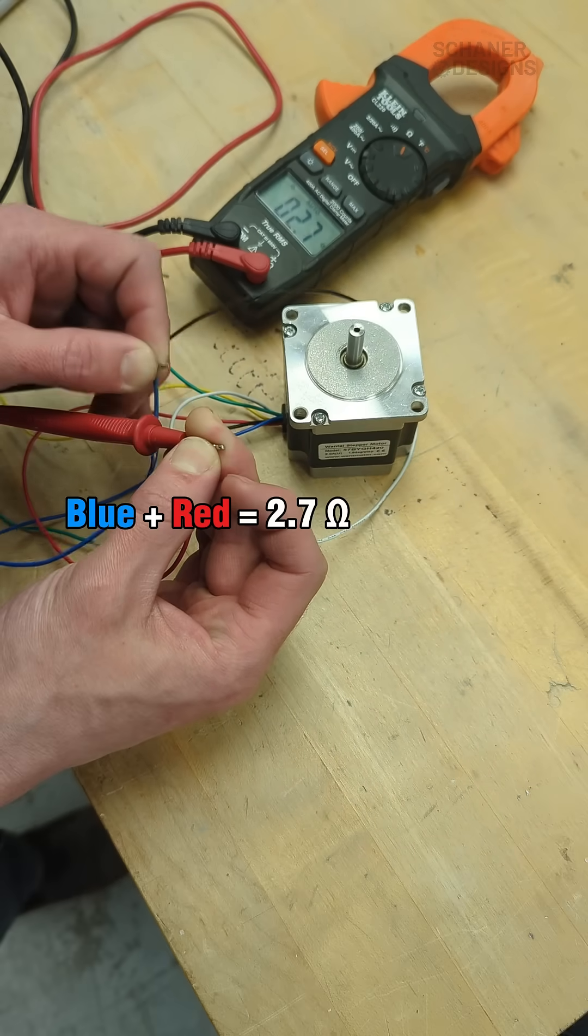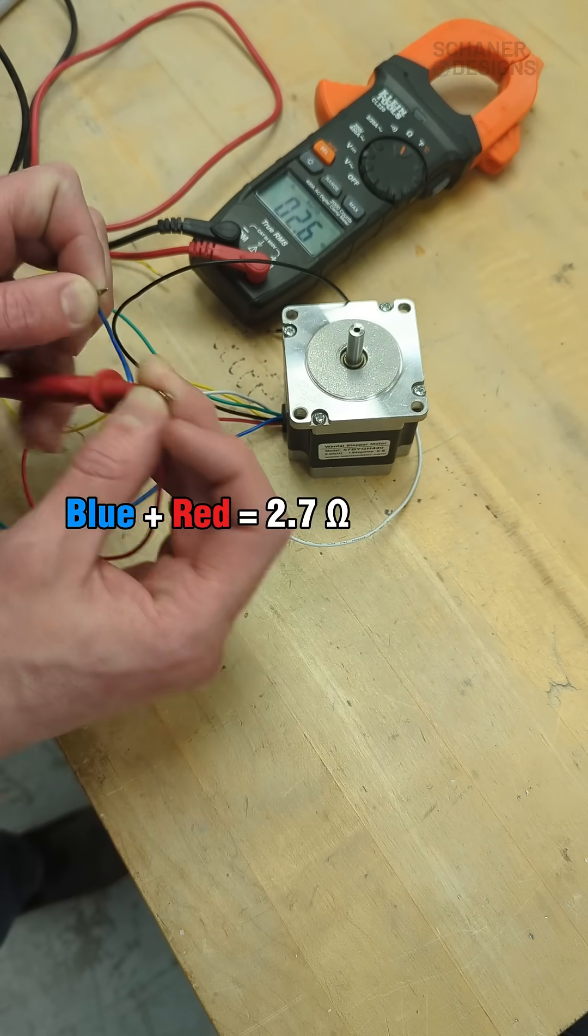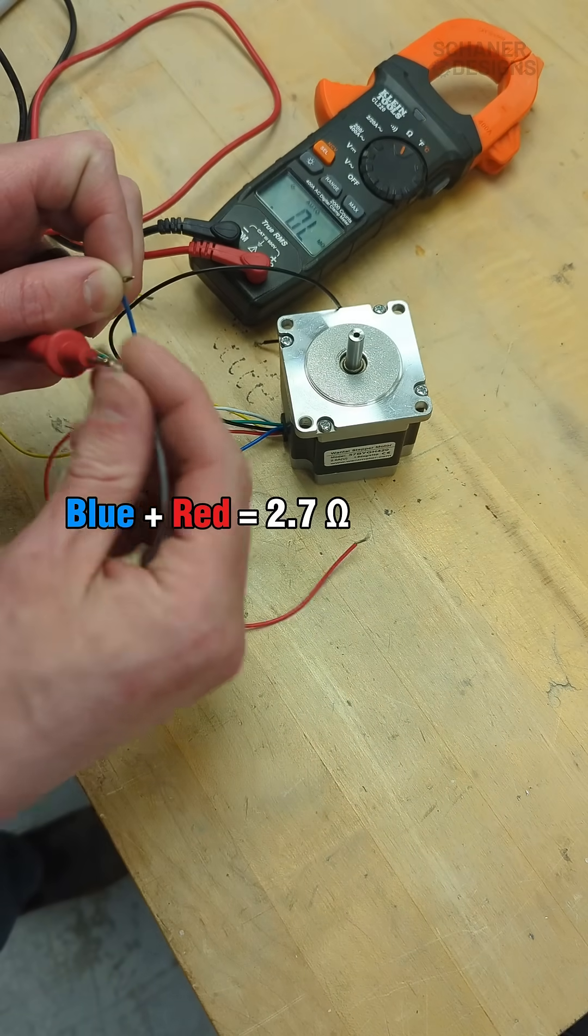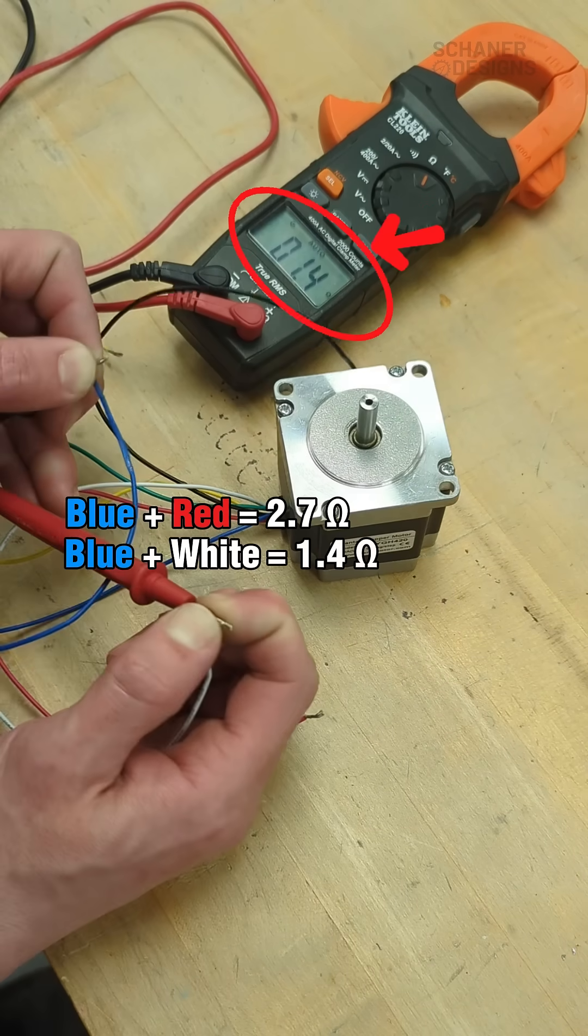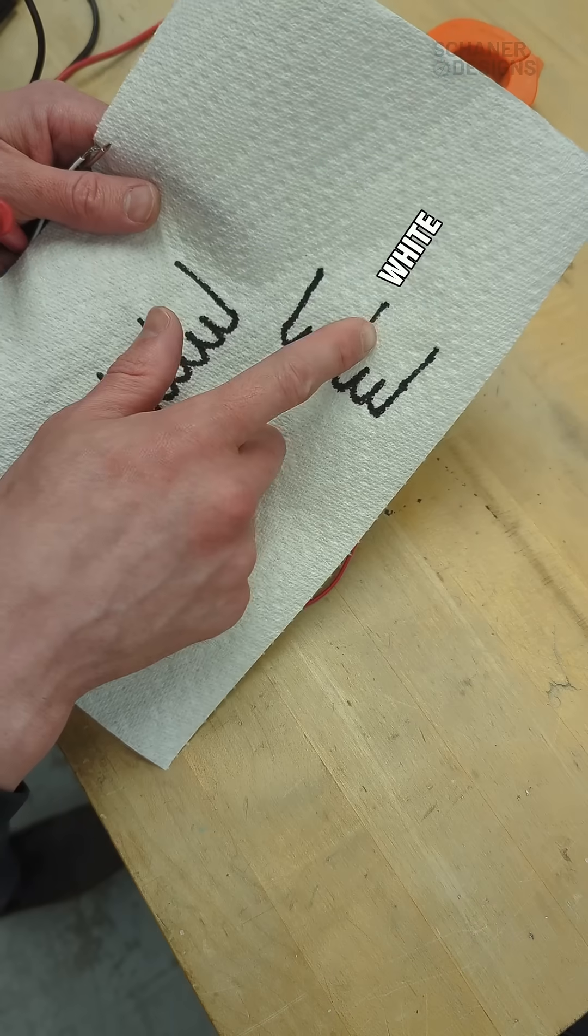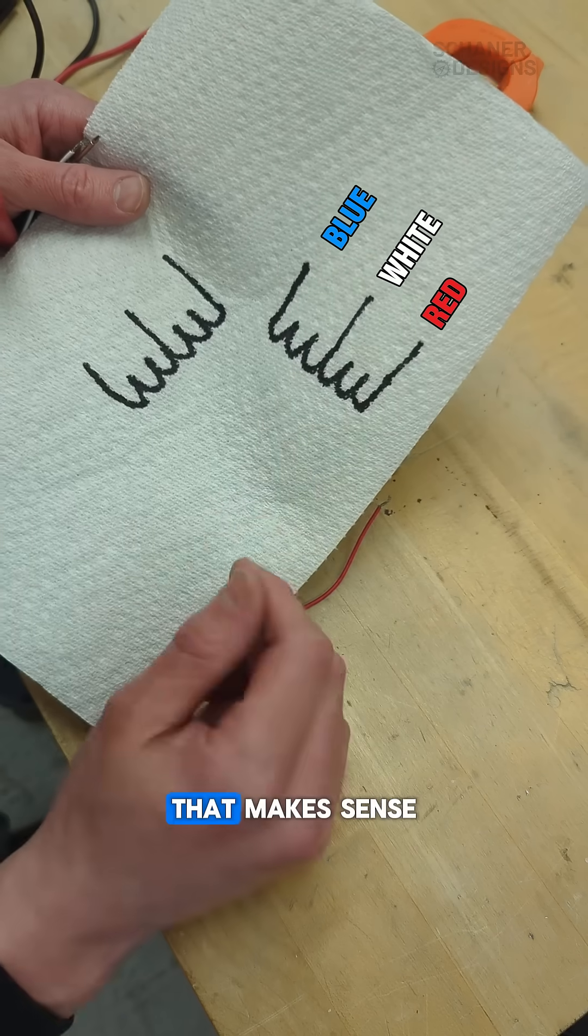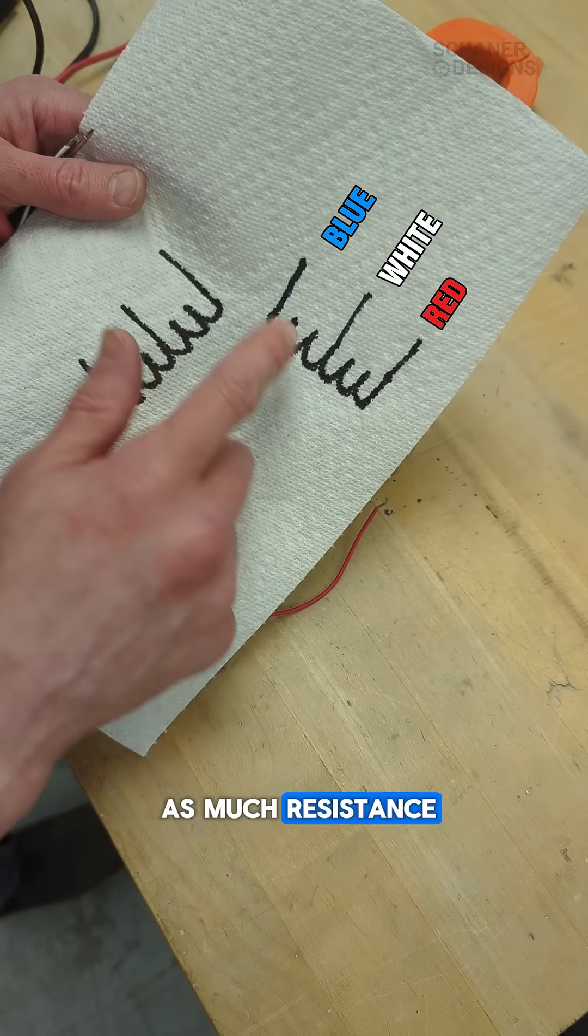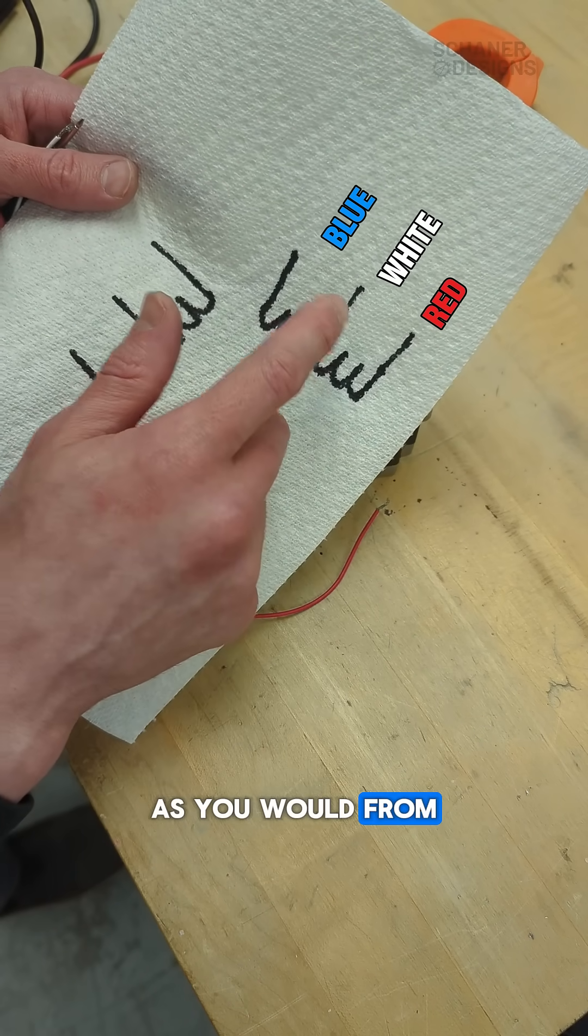So we're getting 2.7 ohms, 2.6 ohms somewhere in there and then if I do blue and white I get about half that. So going back to our diagram if this one's white and then this is blue and red that makes sense you'd expect about twice as much resistance from blue to red as you would from white to either of those.